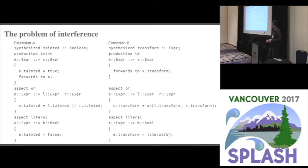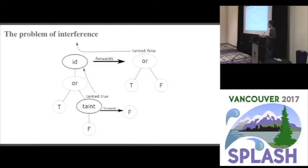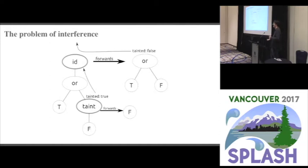On the right hand side we have extension B — a trivial identity transform extension. It has a new attribute called 'transform', implemented on the two host language productions, that just says reproduce the original tree. We have a little node we can put in that says apply this transformation to my subtree. With just this simple host language and two little extensions, we can demonstrate the kinds of problems that interference causes.